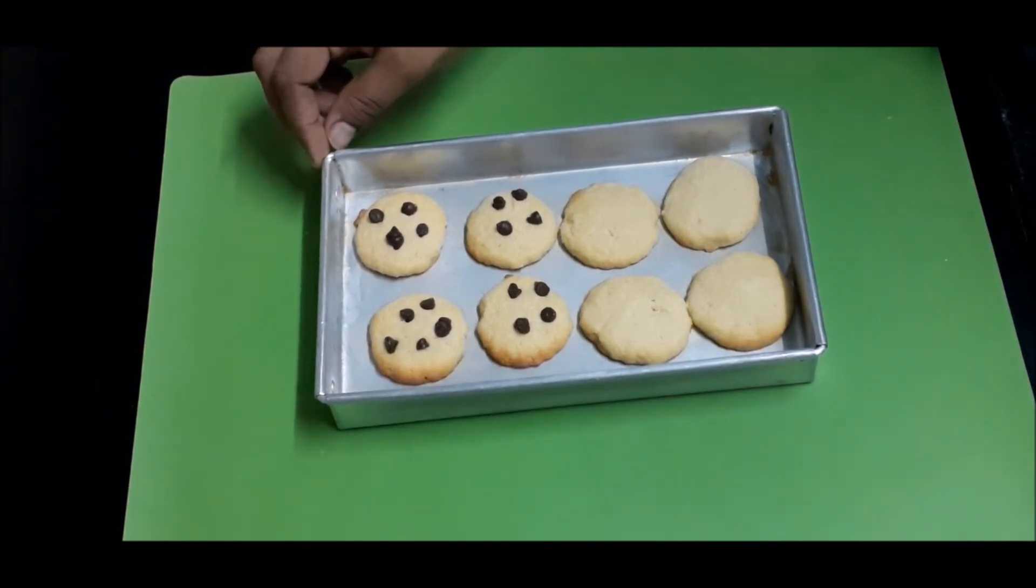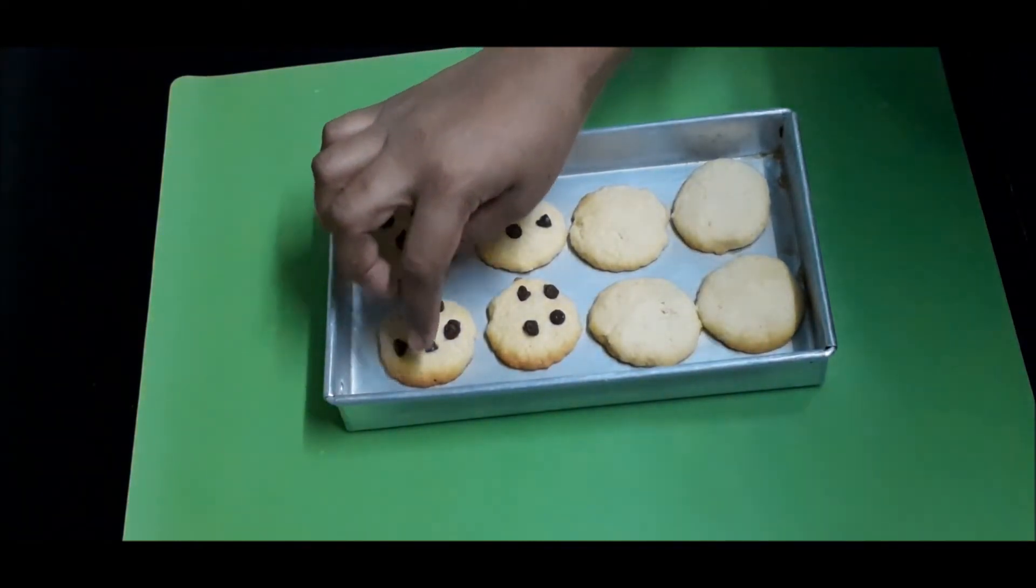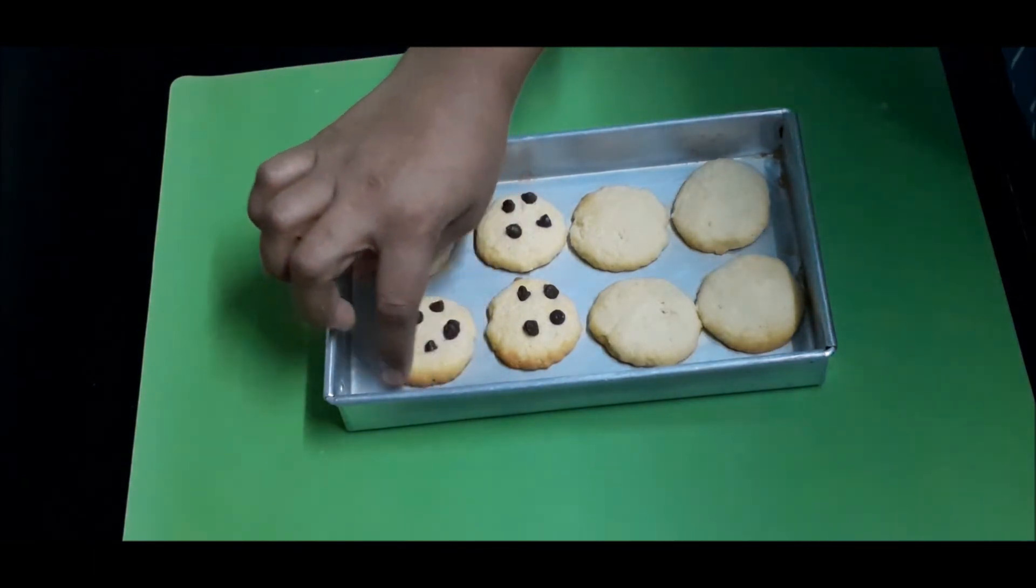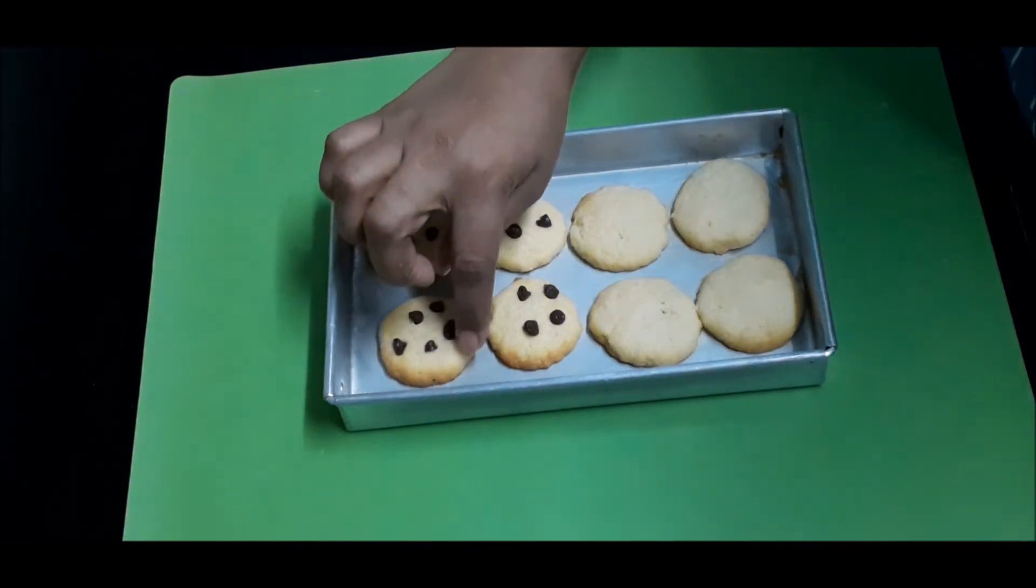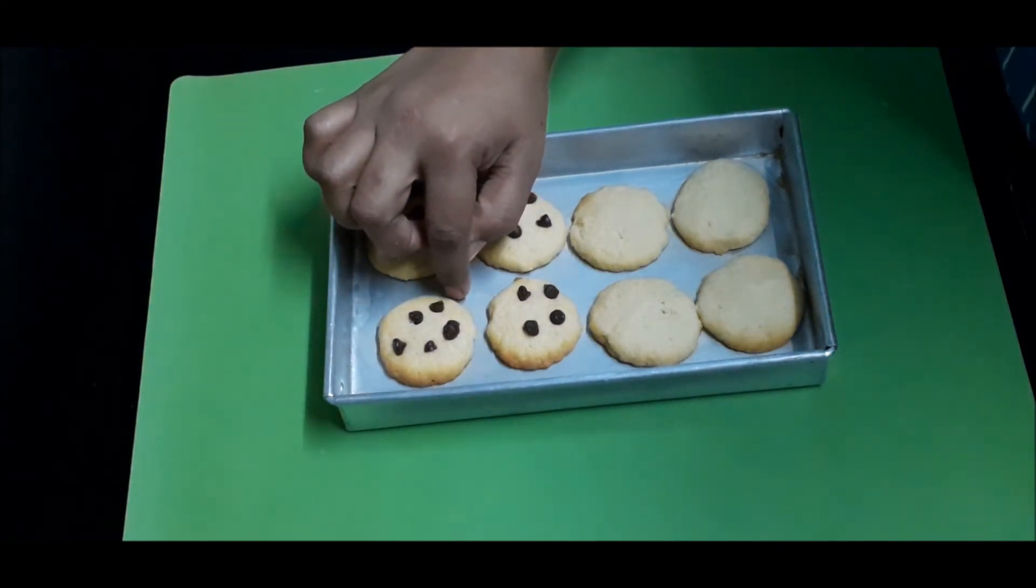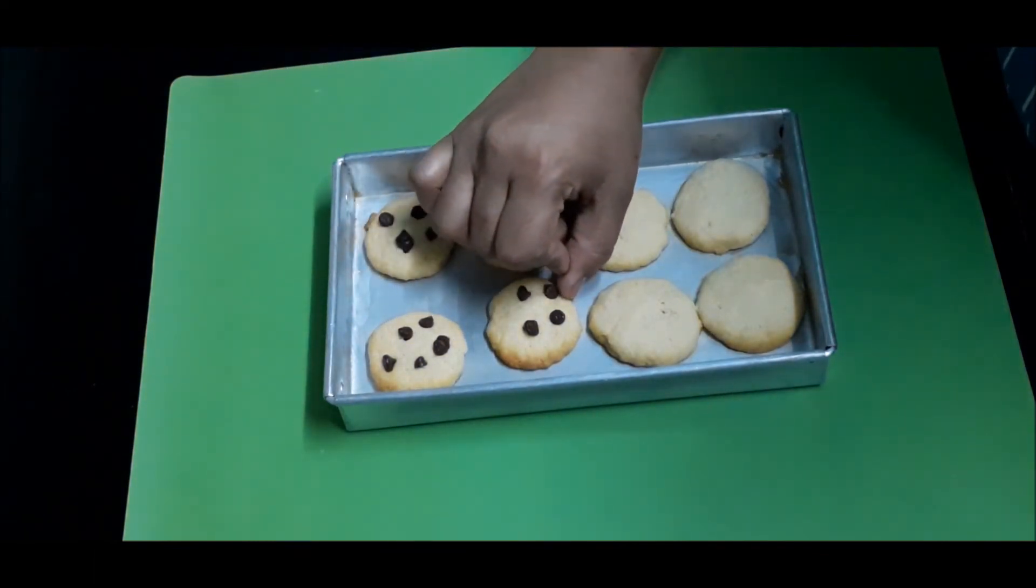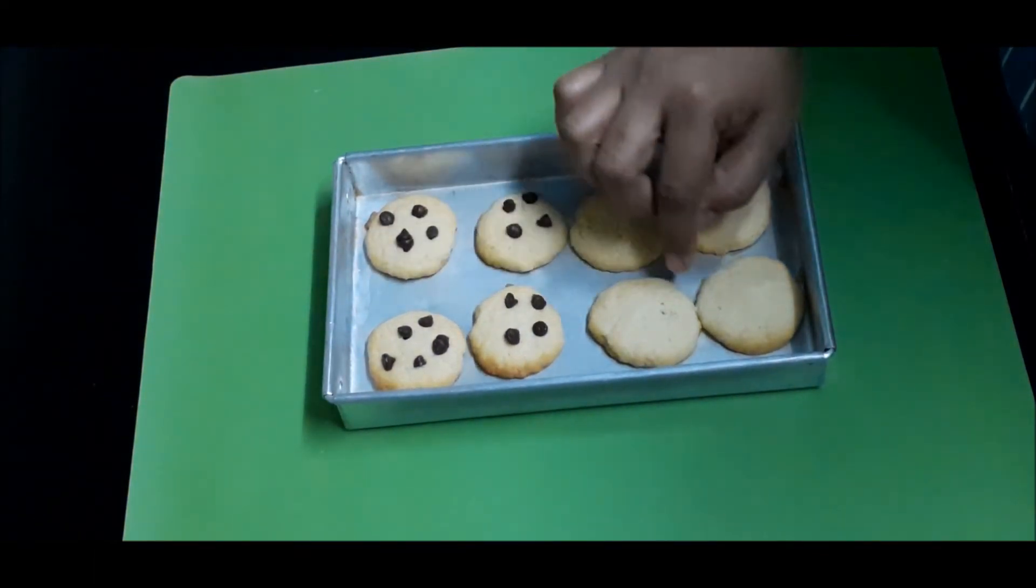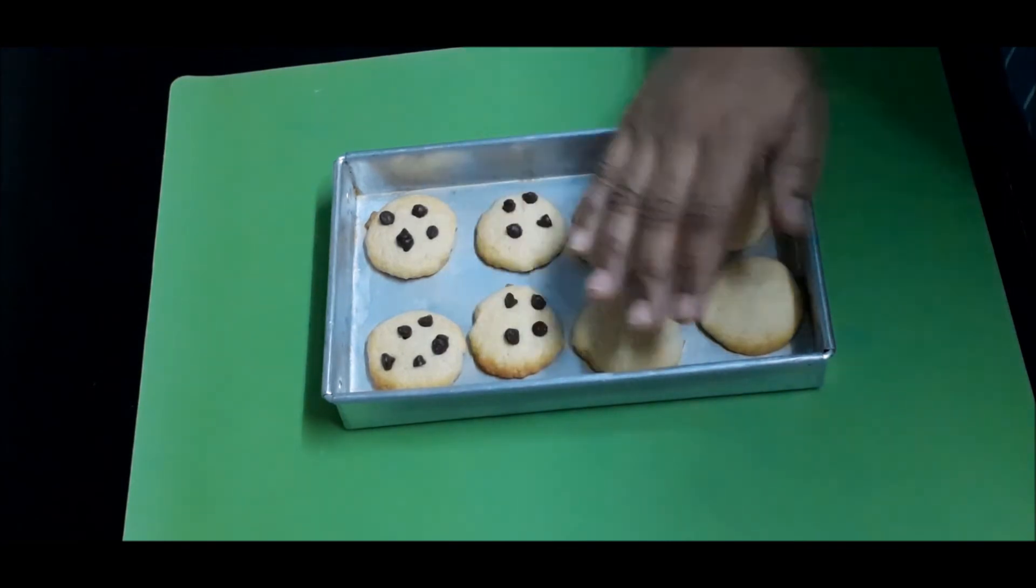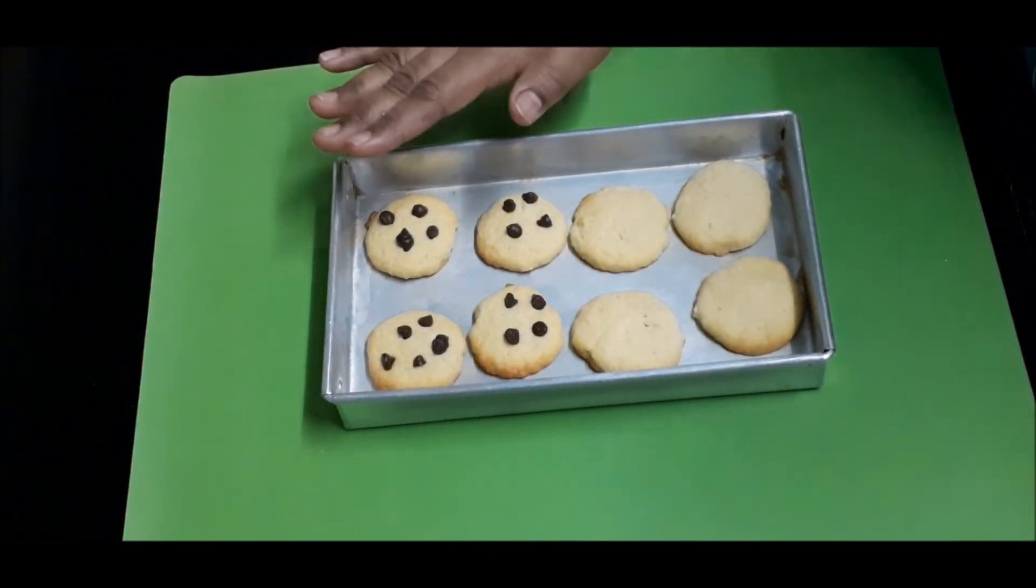Now the cookies are done. There are two things which we have to look. One is there is a golden brown around the cookie and when you try to move the cookie, it moves from its original place. And please leave it untouched for 30 minutes.